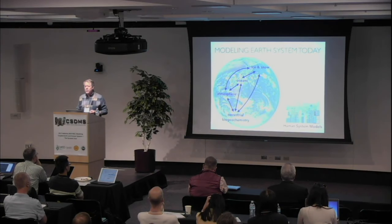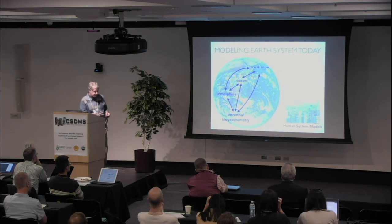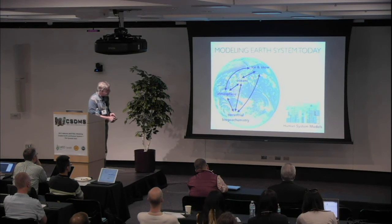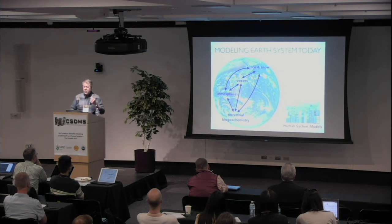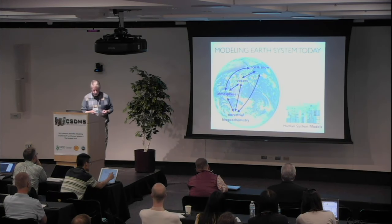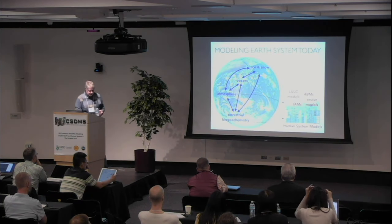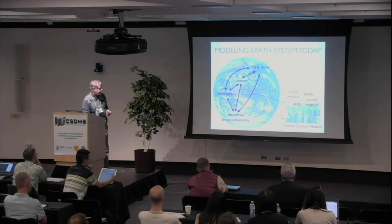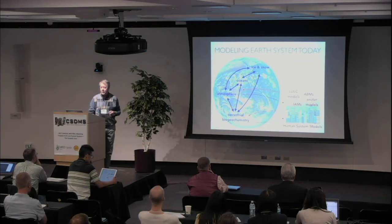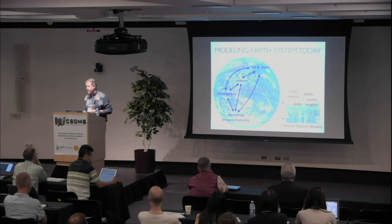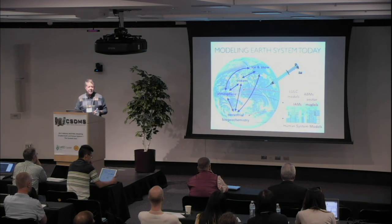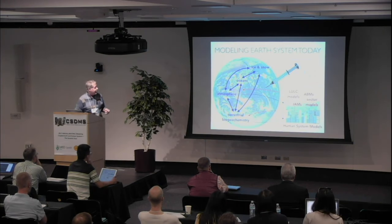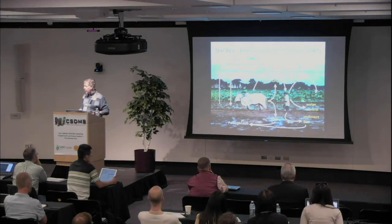This is sort of how we model Earth systems today. We have various different parts of Earth systems, different models, and we look at the relationships between these things. Then there are some human system models that kind of sit over here. Sometimes information from Earth systems gets picked up and brought over and put into human system models, and some information from human system models gets put in as parameters to Earth system models—and maybe a little bit of humanity gets injected into some of these Earth system models.